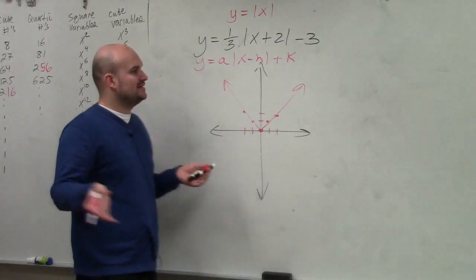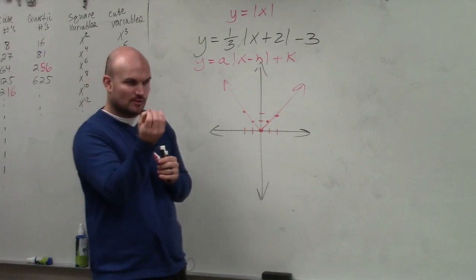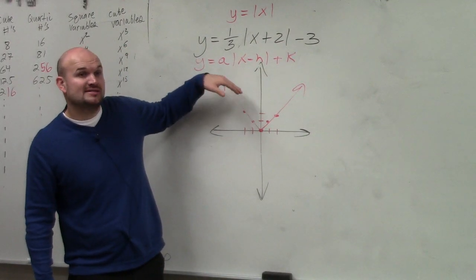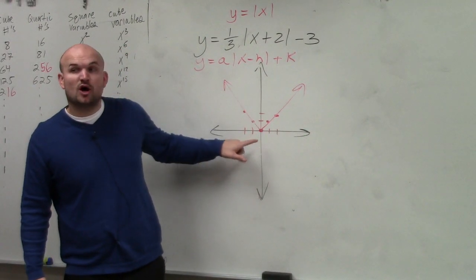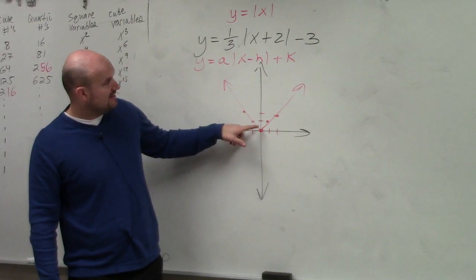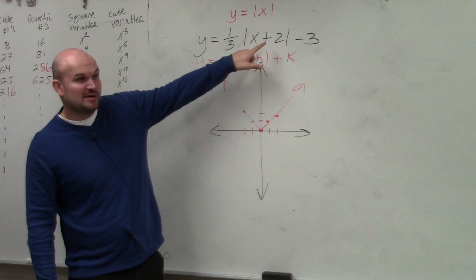Now, the easiest way to apply transformations is to use a focus point. The focus point is the turning point of the absolute value, which we call the vertex. So for this vertex, I need to identify my transformations.